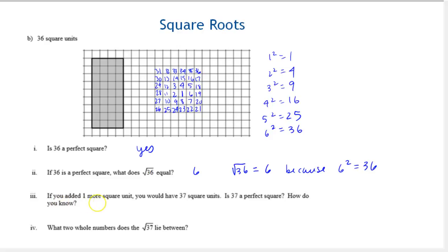The next one asks, if you added one more square unit, you would have 37 square units. Is 37 a perfect square? How do you know? Well, now that we've seen this picture, you can probably see pretty easily that if we just added one more, we'd need to add a lot more to get to the next perfect square, that 37 is not a perfect square. So the answer is no, it doesn't add enough squares to reach the next perfect square, which would be 7 squared, the next perfect square.